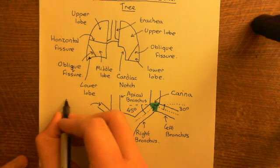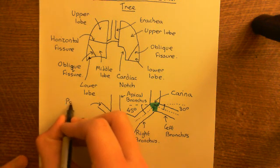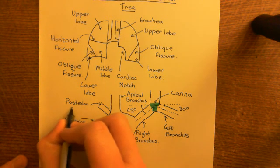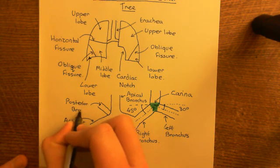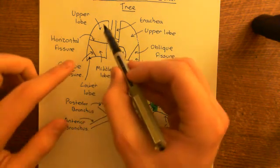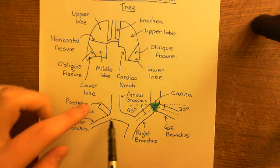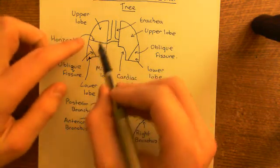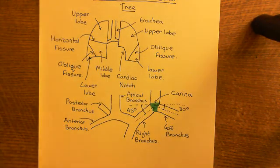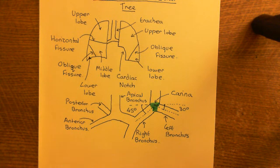This is the anterior bronchus of the right lung. And this one going backwards is the posterior bronchus, again of the right lung. So all these names make very much sense. You've got one that goes up and supplies the top of the upper lobe, one that comes forward supplies the front, and one that supplies the back — the posterior bronchus. That's the supply of oxygen to the upper lobe.